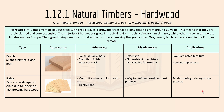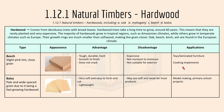Beech has a slight pink tint, close grain, and it's tough, durable, hard, and smooth to finish. The disadvantage is it's expensive, it's not resistant to moisture, and it's not suitable for exterior use because of the moisture. Applications include toys, laminated furniture, or cooking implements.